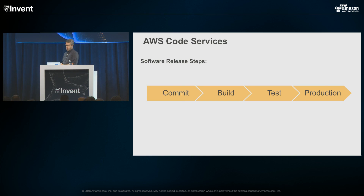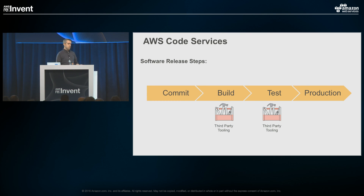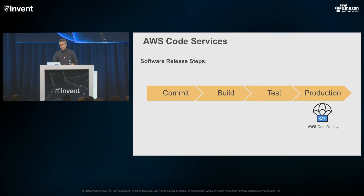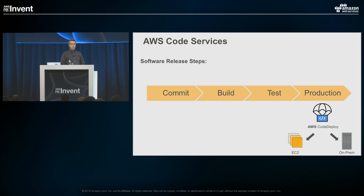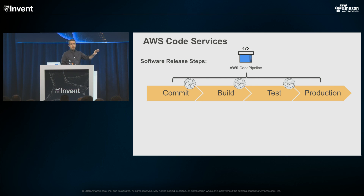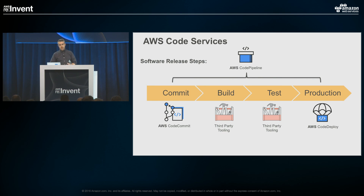Mapping these three services against our release steps: CodeCommit sits at the source stage. For build and test, we don't have our own services today, but we have a rich third-party ecosystem of SaaS, enterprise, and open source offerings integrated with the rest of our tool suite. CodeDeploy handles production deployments on EC2 or off EC2 — basically anywhere you can run the agent. CodePipeline can be used to orchestrate this entire process, from commit all the way out to production deploy.